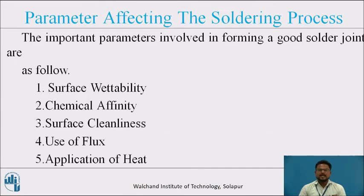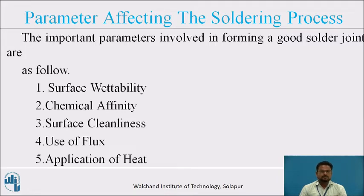Coming to the parameters affecting the soldering process: the important parameters involved in forming a good solder joint are surface wettability, chemical affinity, surface cleanness, use of flux, and application of heat. For surface wettability, for successful soldering of a metal surface, it must be able to get wetted by the solder. For proper wetting action to take place, the solder and base metal should have good liquid solubility between them.